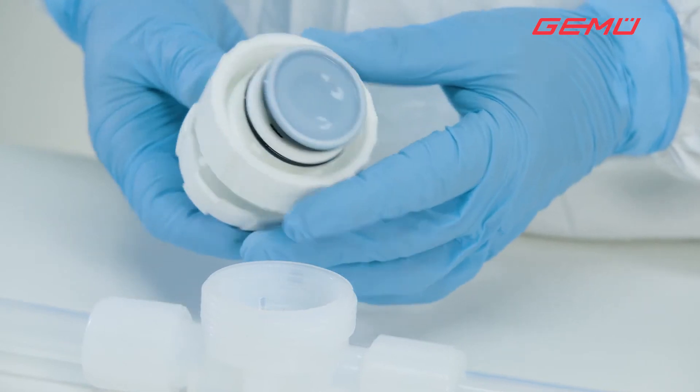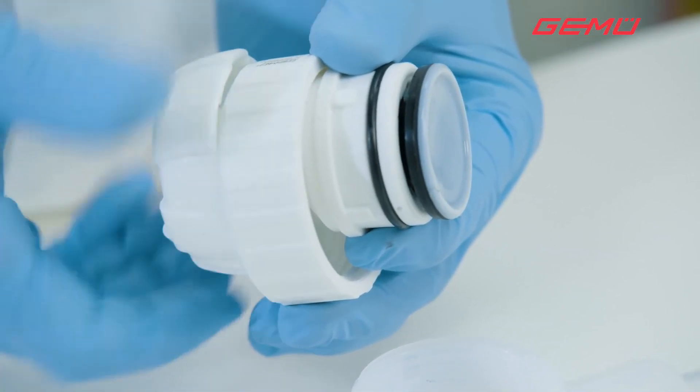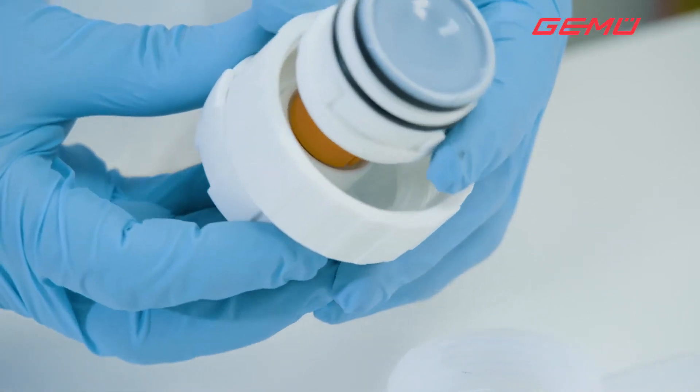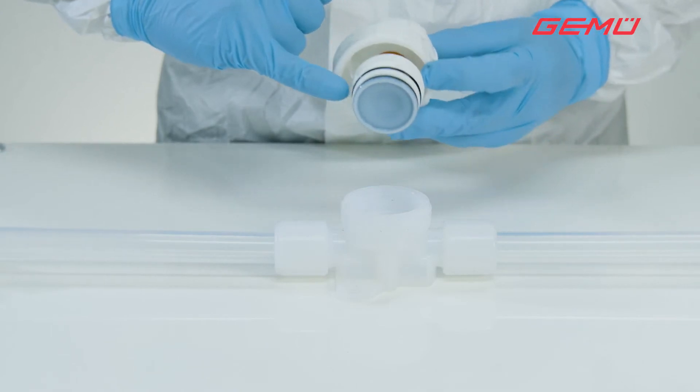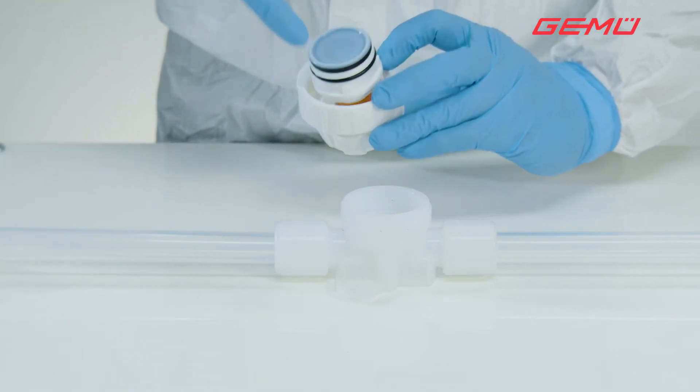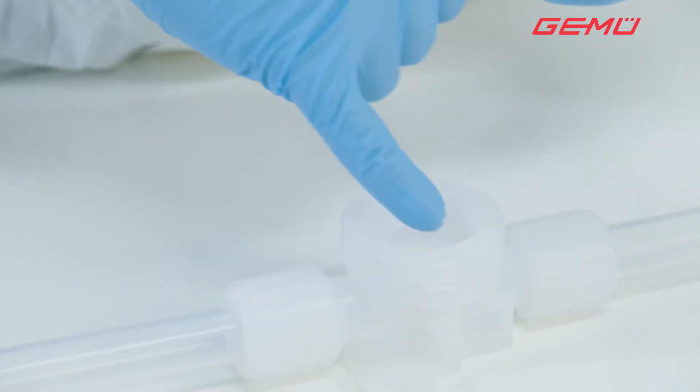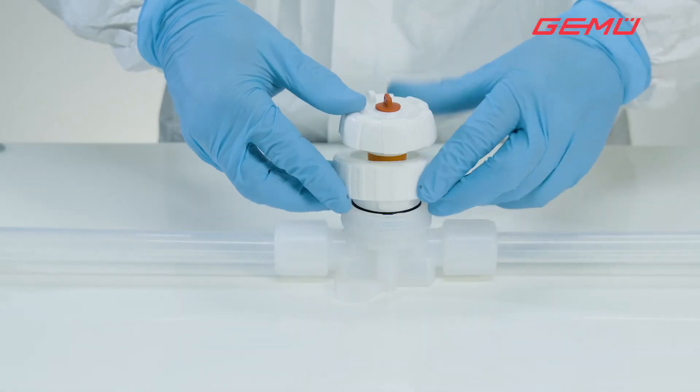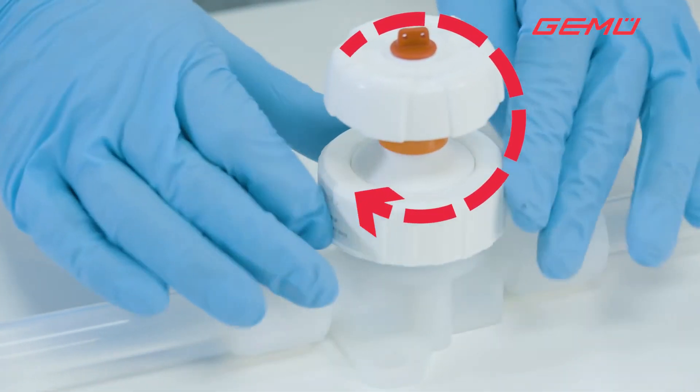Move the actuator to the open position. The fixing lugs in the actuator and the fixing grooves in the valve body indicate the correct installation position. Position the actuator on the body and tighten the central nut clockwise until it is hand tight.